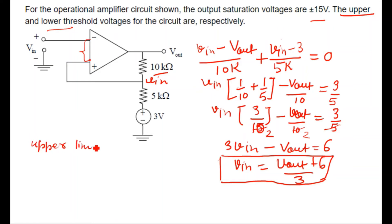So we need to find the value. So for upper limit, V_out will be plus 15 volts. V_in upper is equals to 15 plus 6 divided by 3.